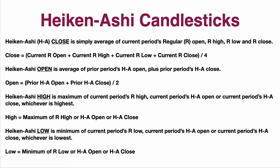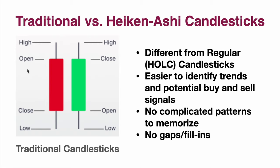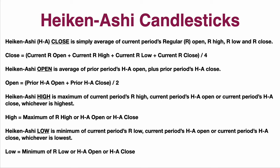How do we calculate Heiken Ashi candlesticks? It's very important that you understand — when you look at Heiken Ashi candlesticks, you will see a close, an open, a low, a high. You'll see these things on the candlesticks, but they are calculated differently. With Heiken Ashi — HA is Heiken Ashi, R is just regular time periods — the close on a Heiken Ashi candlestick is simply the average of the current period.